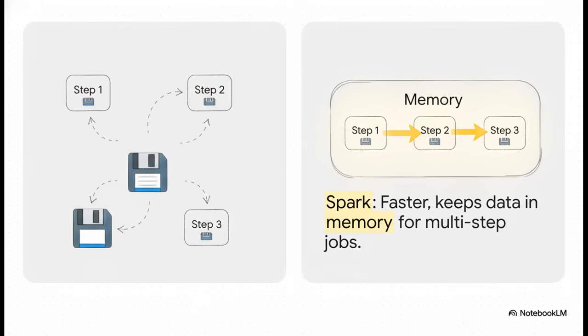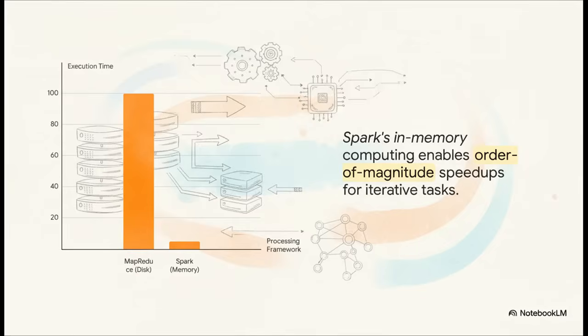Spark, on the other hand, tries to do everything it can in the computer's lightning-fast RAM, its memory, and only writes to the slow disk when it absolutely has to. For jobs that need to go over the same data again and again—think training a machine learning model—the difference is just mind-blowing. By keeping data in memory, Spark can be literally orders of magnitude faster. It can turn jobs that used to take hours into jobs that take just a few minutes. It's a total game-changer.